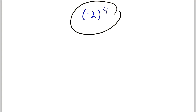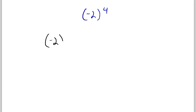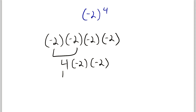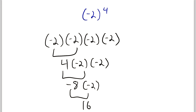Alright, so hopefully you've given this one a shot. Let's go through the solution. All you've got to know for this first one is what an exponent means. So negative two to the power of four is equal to negative two times negative two times negative two times negative two. We've got four negative twos because we had an exponent of four. So then we just have to do the multiplication. Negative two times negative two is positive four, four times negative two is negative eight, negative eight times negative two is positive 16. So negative two to the power of four is equal to positive 16.